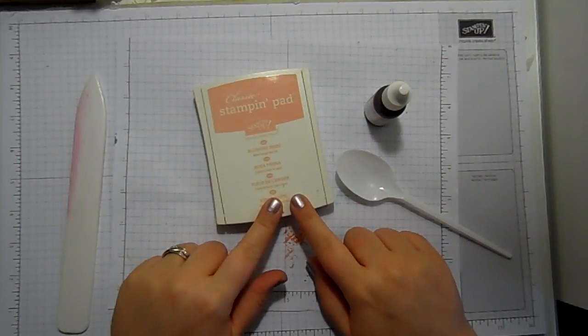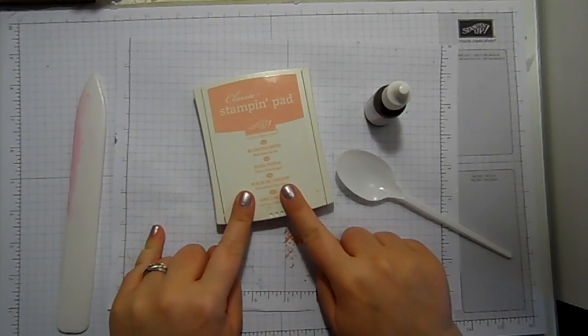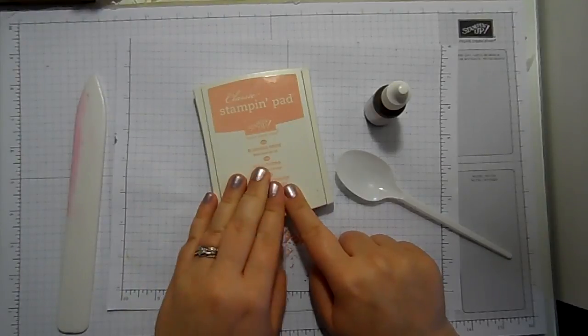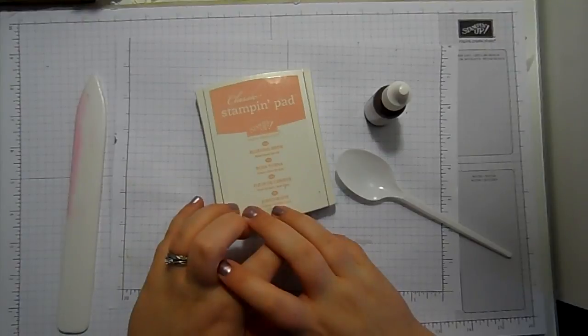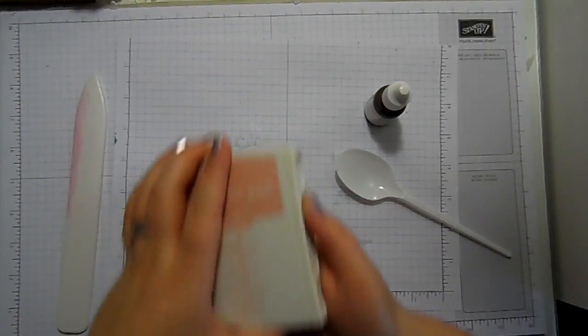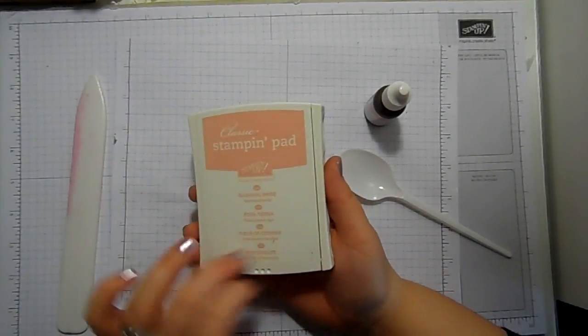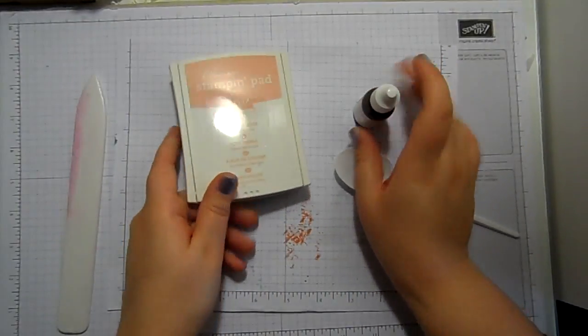I was stamping the other day with my Blushing Bride Stampin' Up classic ink pad and noticed that I'm not quite getting the vibrancy of color that I want. That basically means that the ink pad is running out of ink, so it's time to re-ink.